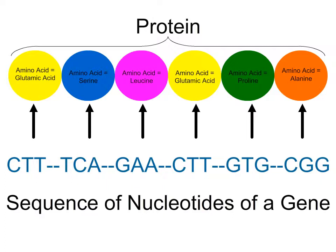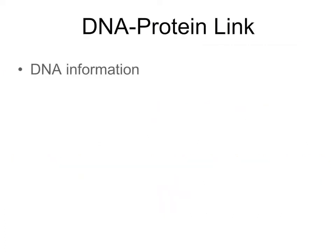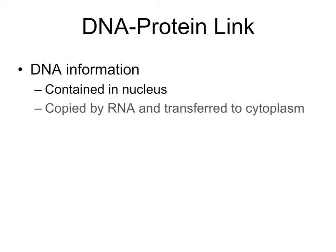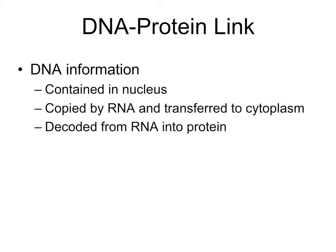Remember, we are showing only a section of a gene here. Even the smallest protein-coding gene in the human genome is 500 nucleotides long, and most genes are thousands of nucleotides long. But how are the instructions of a gene converted into a protein? That DNA information is in the nucleus but cannot leave it, so a copy of the gene is synthesized with RNA. This copy is then transferred to the cytoplasm, where the information is decoded into a protein.